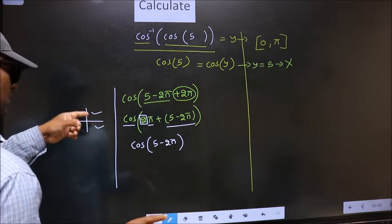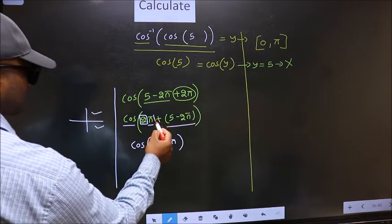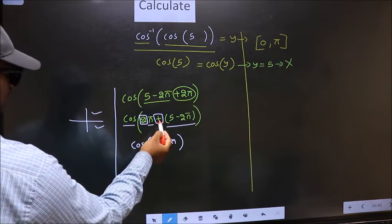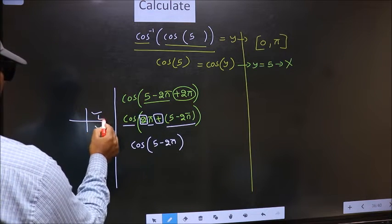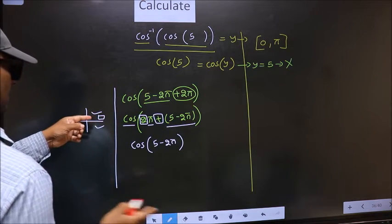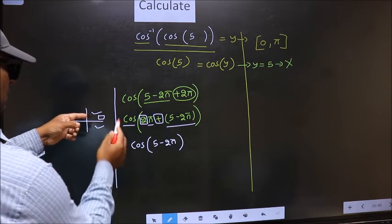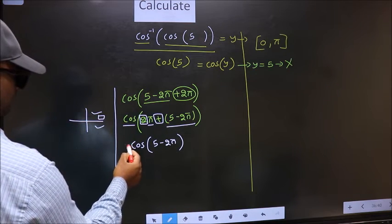And all the even multiples of pi they lie in either in the first or in the fourth quadrant. So now to select the quadrant we should look at this symbol. Here we have plus that means angle lies in the first quadrant. And in the first quadrant cos is positive. So put plus.